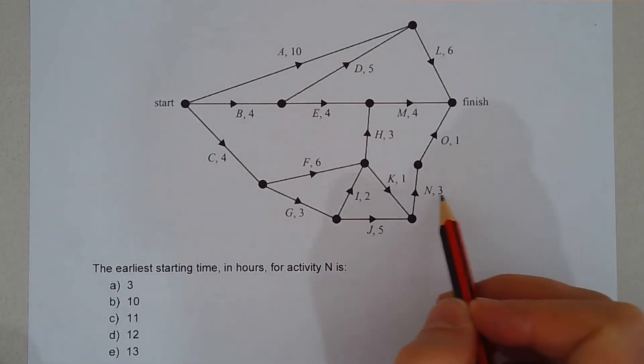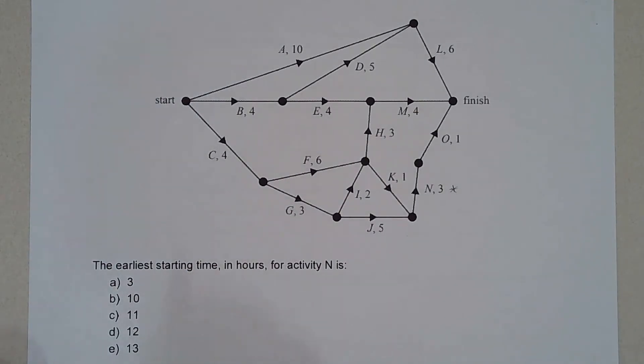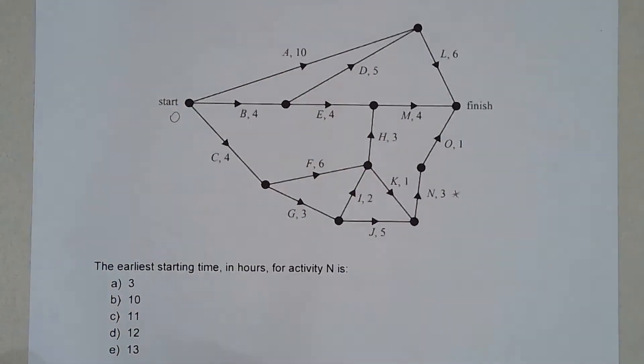Let's first find our activity N, that's N just there. And let's start with the forward scanning. Start with zero.